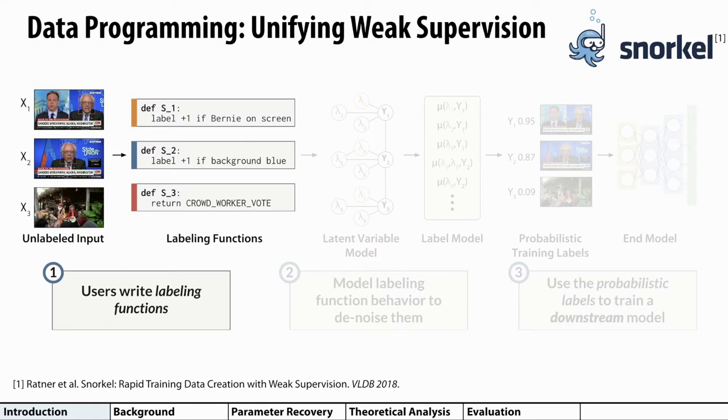In this slide, we're shown an example of a user trying to detect interviews with Bernie Sanders in a collection of cable TV news videos. They can use the labeling functions to model user-defined heuristics, such as looking for Bernie Sanders' face in a particular frame or checking whether the background is blue. We can even model crowd worker annotations with this framework. The labeling function can return the worker's vote on the data points the crowd worker processed and abstain on the rest of the data points.